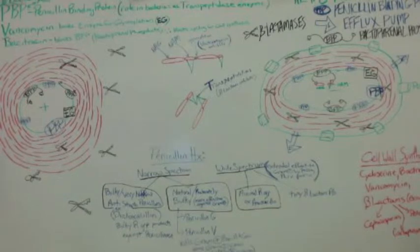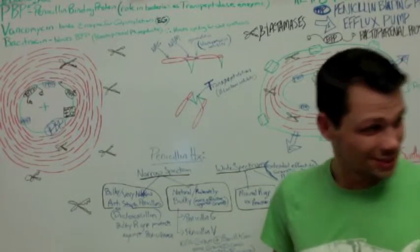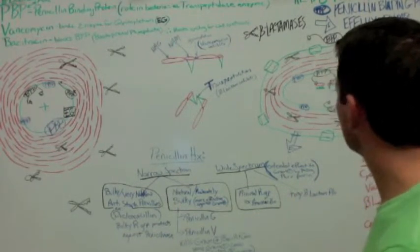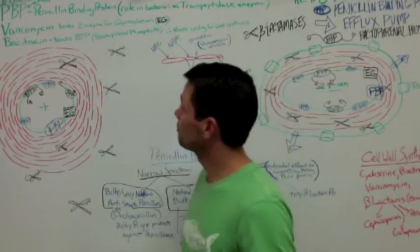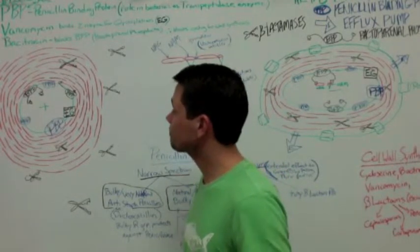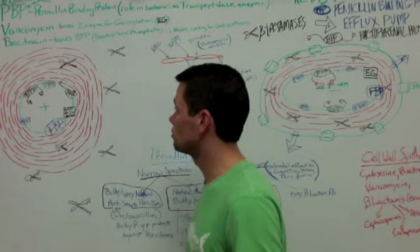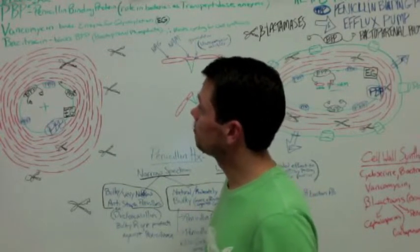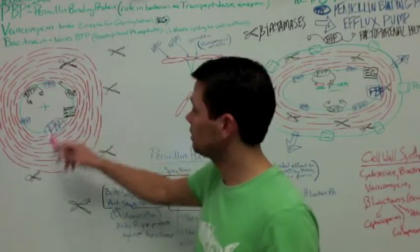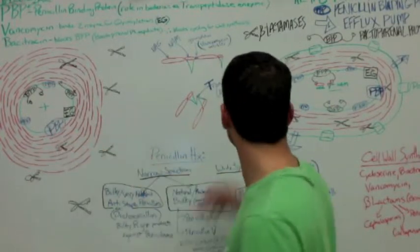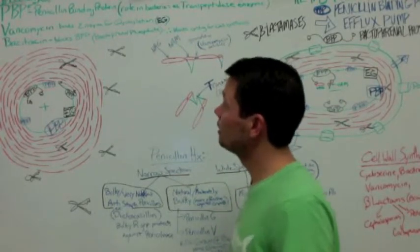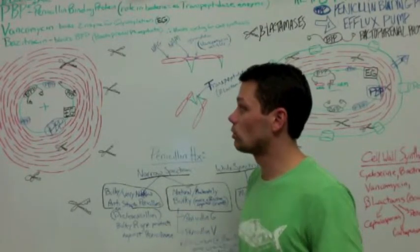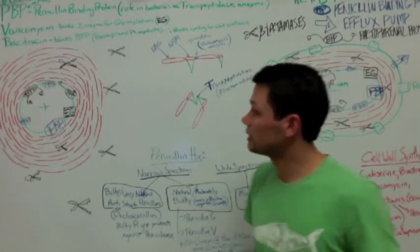The first thing I'm going to show you is what I've drawn here. We'll start with penicillin because that was the first one to be discovered. Penicillin's action is to bind to what are called penicillin binding proteins—I wrote it here as PBP—and both gram-negative and gram-positive bacteria have these PBPs. It's called that historically, but what they really are is transpeptidase enzymes.